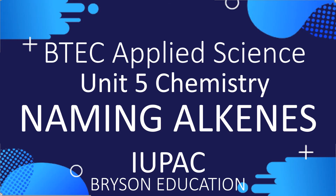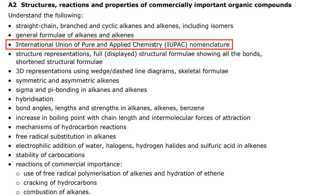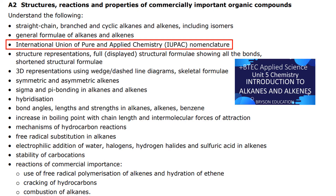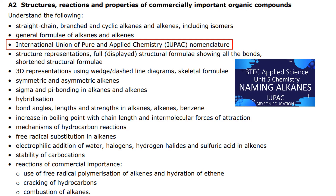Hello, welcome to my channel on chemistry lessons. This is BTEC Applied Science, Unit 5 Chemistry, and we're going to look at naming of alkenes. This fits on the spec under learning MA2, using the IUPAC nomenclature. If you haven't seen the previous videos on introduction to alkanes and alkenes and naming of alkanes, I suggest you go and watch those first — you'll find a link in the description below.